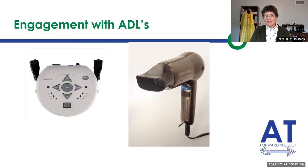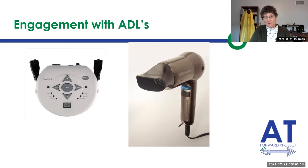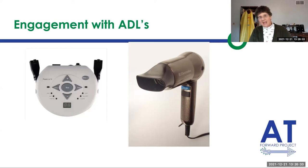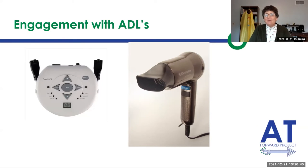That was where we started to hook this student. The thing on the left, if you've never seen it, is a power link. A power link allows you to plug anything electrical into it and then plug a switch in. So we put the hairdryer in there with a switch. When she touched the switch, the hairdryer turned on. The first time, mom did hand-over-hand, and then she was blow-drying her own hair. We ended up making a PVC handle that actually held the hairdryer, so she was totally independent. We started to see her move her head around and lean in — she did all these cool things.